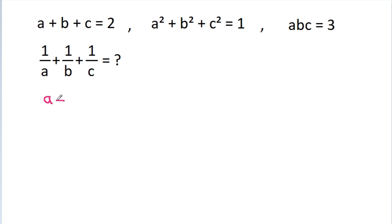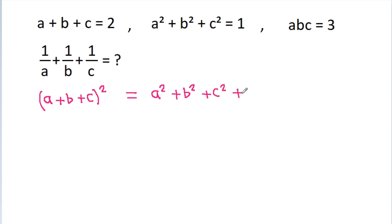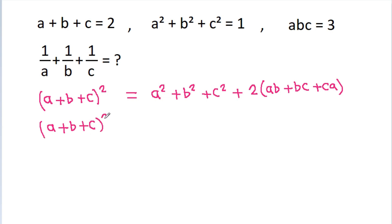So, (a plus b plus c) squared is equal to a squared plus b squared plus c squared plus 2 times (ab plus bc plus ca). That is 1 squared is equal to a squared plus b squared plus c squared plus 2 times (ab plus bc plus ca).